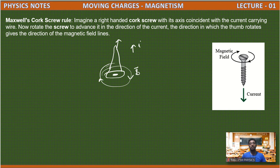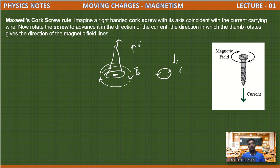I hope you understood. When the current is flowing downward, you have to loosen the screw — rotate in the anticlockwise direction. By using Maxwell's cork screw rule, we can find the direction of magnetic field. Thank you.